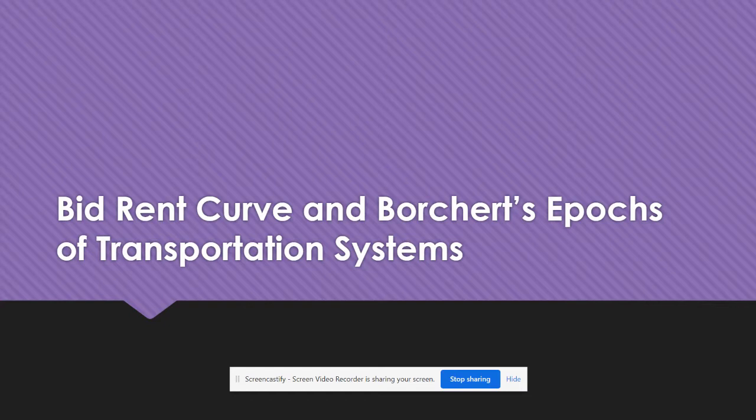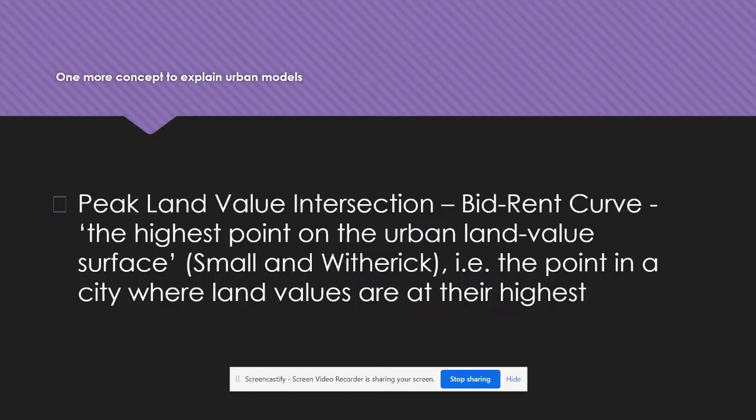The first one we're going to spend a little bit of time on. I think it's going to correspond with question number three in your guide. And that is the bid-rent curve. And the other one is called Borchert's Epochs of Transportation Systems. So bid-rent curve, also called peak land value intersection. Let me show you the model and then we'll actually read about it.